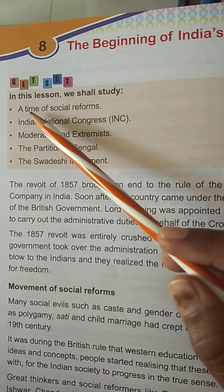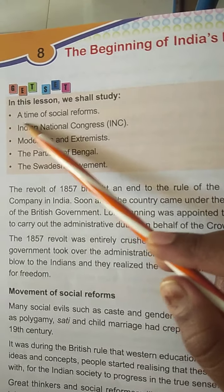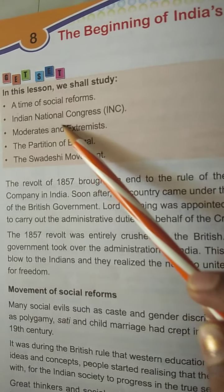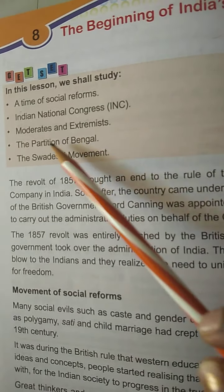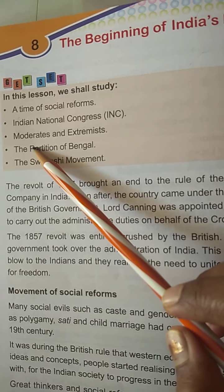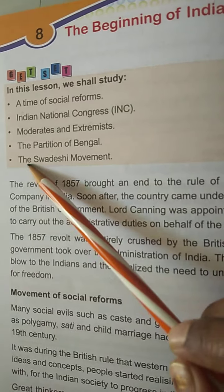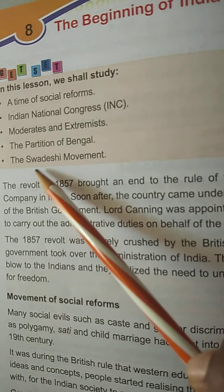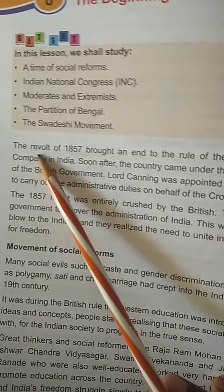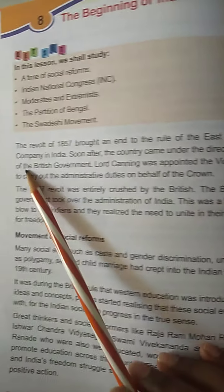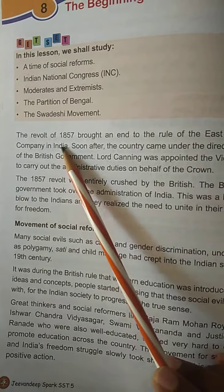In this chapter you will be learning about a time of social reforms, Indian National Congress (INC), moderates and extremists, the partition of Bengal, and the Swadeshi movement. The revolt of 1857 brought an end to the rule of the East India Company in India.